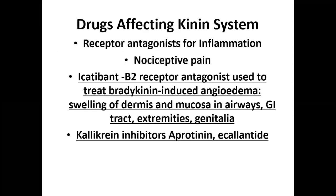Drugs affecting the kinin system include receptor antagonists for inflammation and nociceptive pain. Whenever there is abnormal secretion of kinins, it produces inflammation, reduction in blood volume, and pain. Available antagonists include icatibant, a B2 receptor antagonist used to treat bradykinin-induced angioedema — swelling of the dermis, mucosa, airways, GI tract, extremities, and genitalia. Kallikrein inhibitors such as aprotinin and ecallantide are also available and used in rare, life-threatening situations.